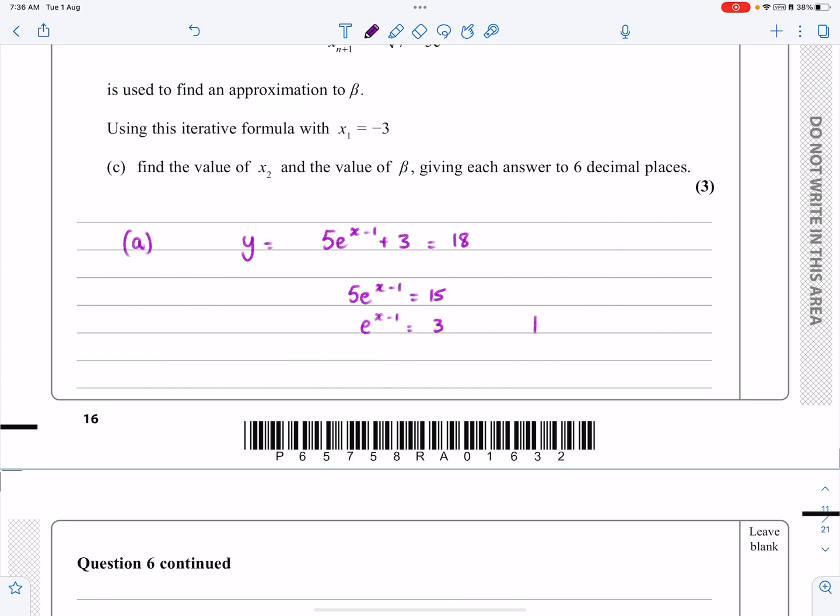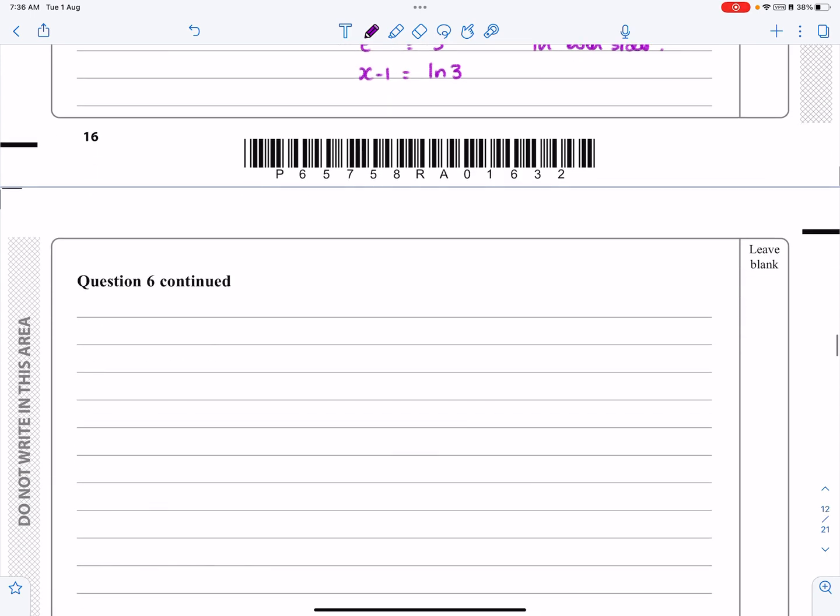At this stage, if we log both sides, remember when we work with exponentials and logs, they're inverses of each other. So if I log e^(x-1), I get x minus 1. So that's equal to log 3 there. Rearranging that, x is going to be log 3 plus 1.